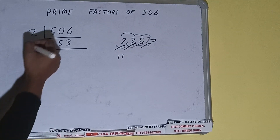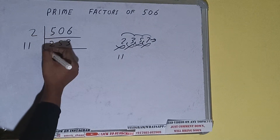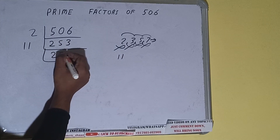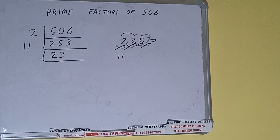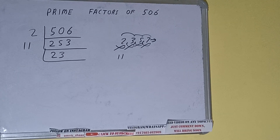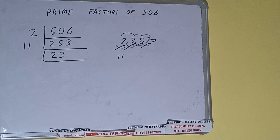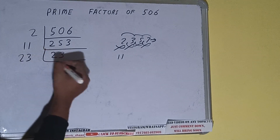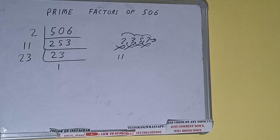Let's check with 11. With 11, it is divisible. So 253 divided by 11 gives us 23. Now 23 is further not divisible by 11, and 23 is also a prime number, so it is only divisible by itself, that is 23.